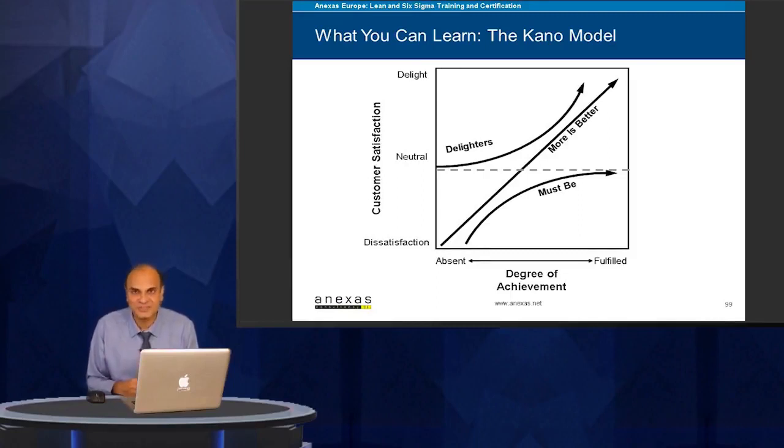Must be characteristics are those which, if absent, would dissatisfy, and if present, would not delight—customers will stay neutral. Delighters are characteristics which, if not present, would not dissatisfy, but if present, would definitely delight the customer.